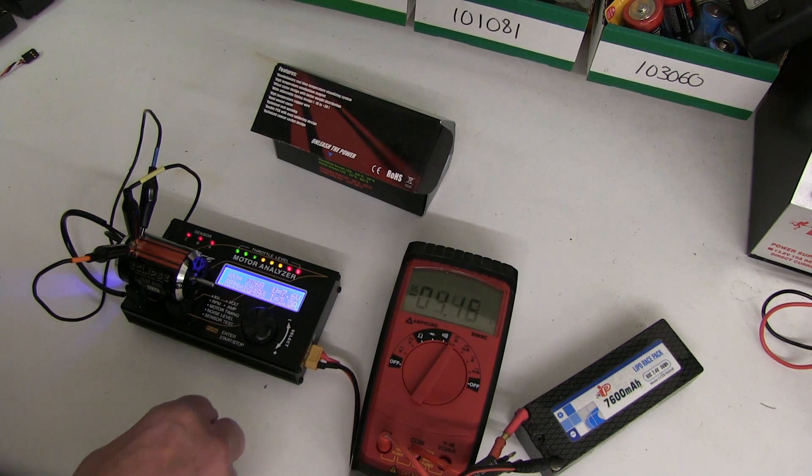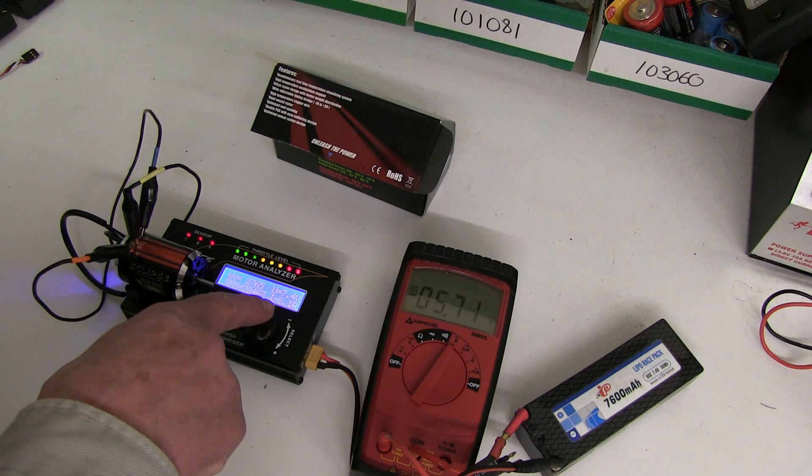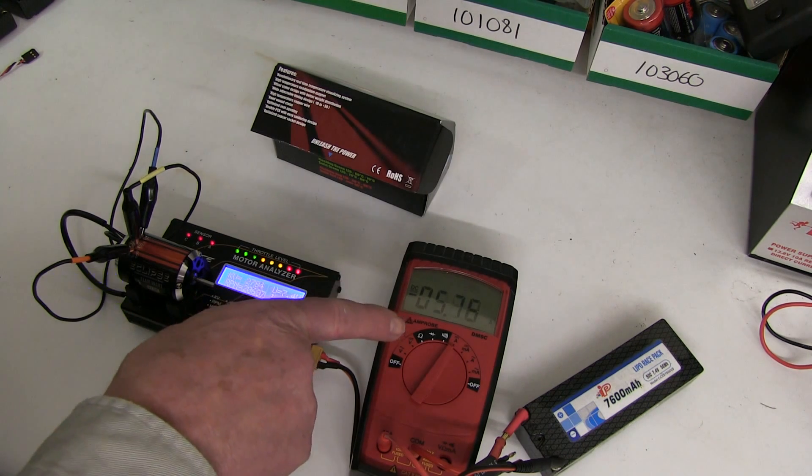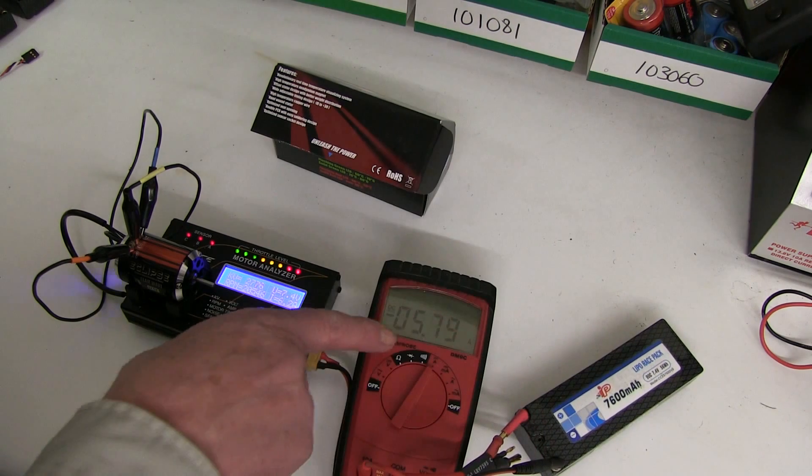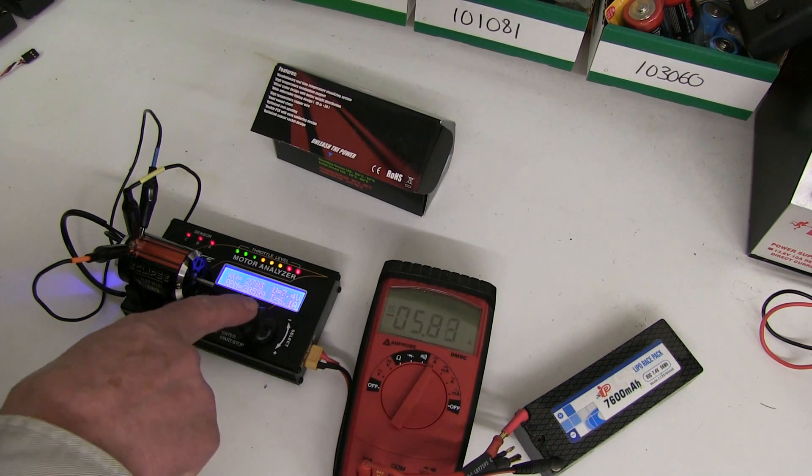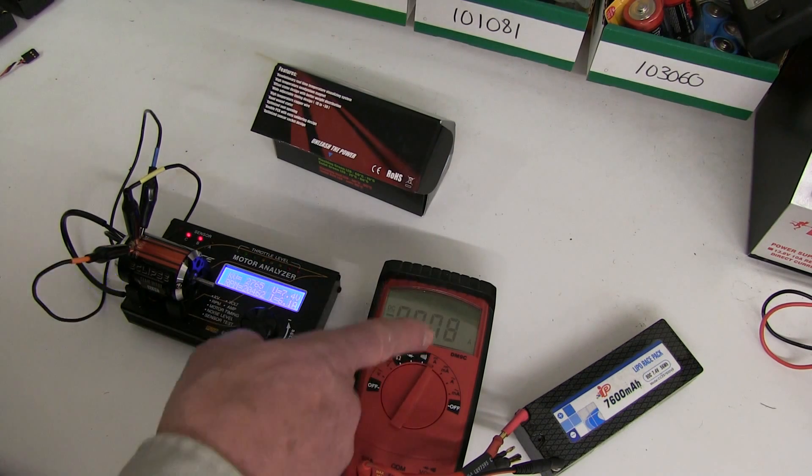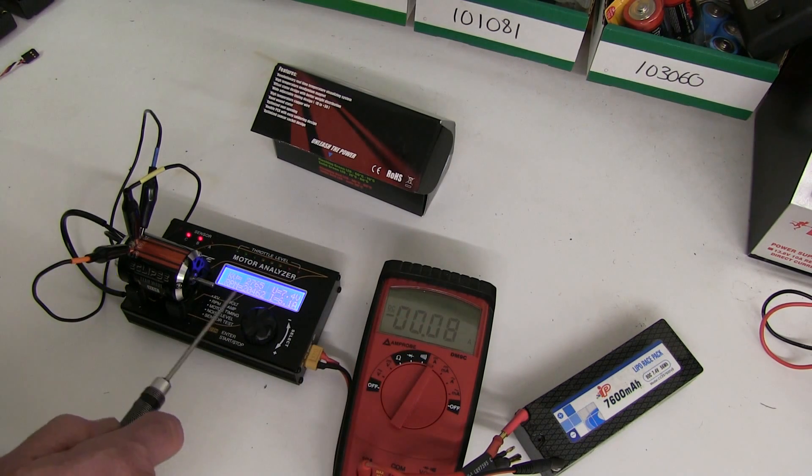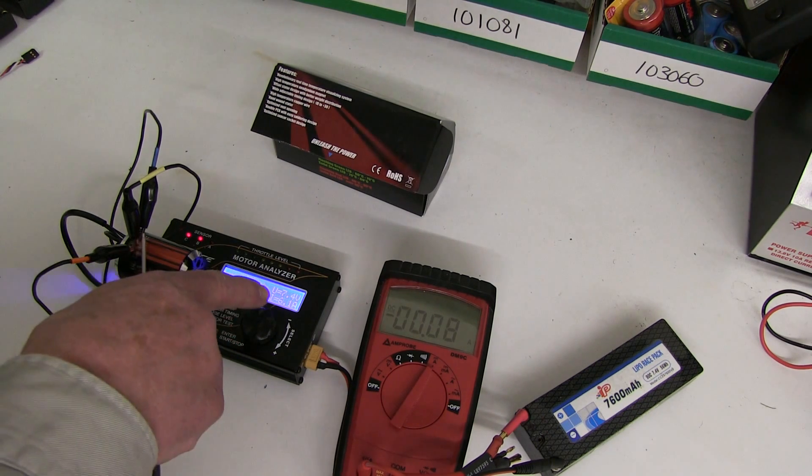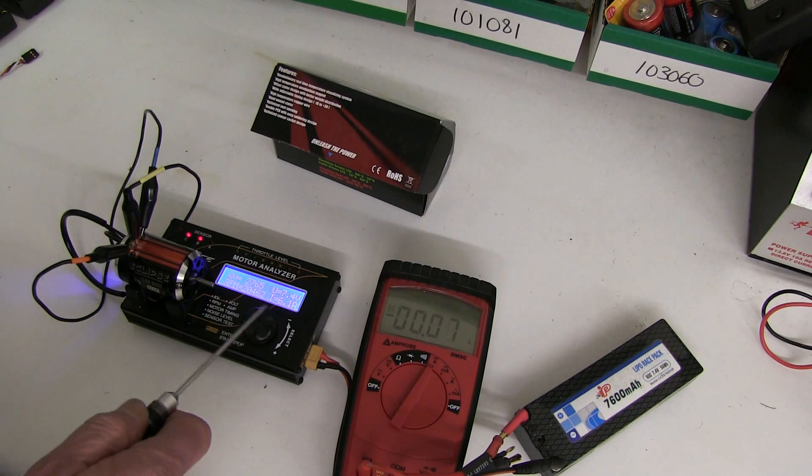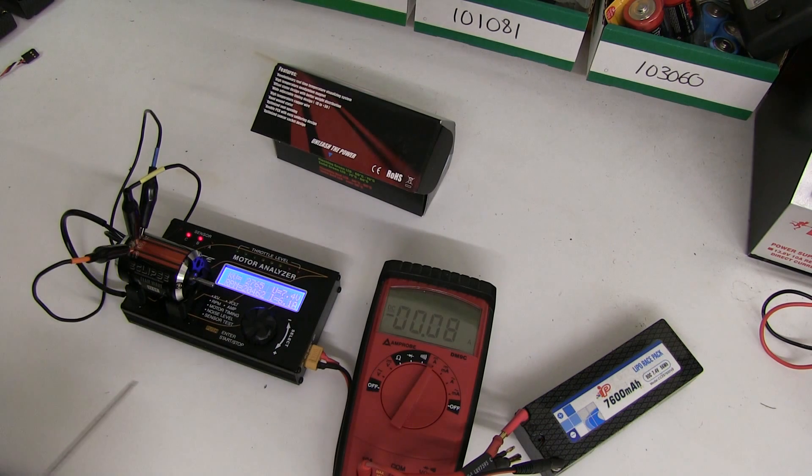That's about optimum for this motor, about 6 amps. Now if it had been higher or lower, you'd adjust the timing to get 6 amps.